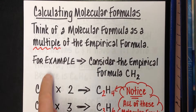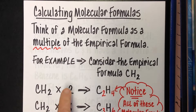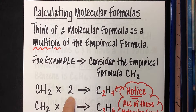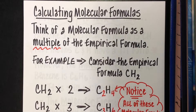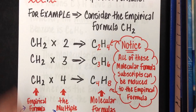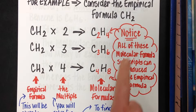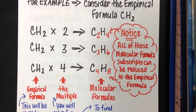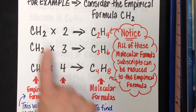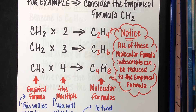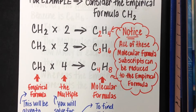Using the empirical formula CH2, you can multiply by a multiple of 2, 3, or 4 to get the molecular formula. If the multiple is 2, you get C2H4. If the multiple is 3, you get C3H6. If the multiple is 4, you get C4H8. Notice that all of those molecular formula subscripts could be reduced back to give you the empirical formula CH2.